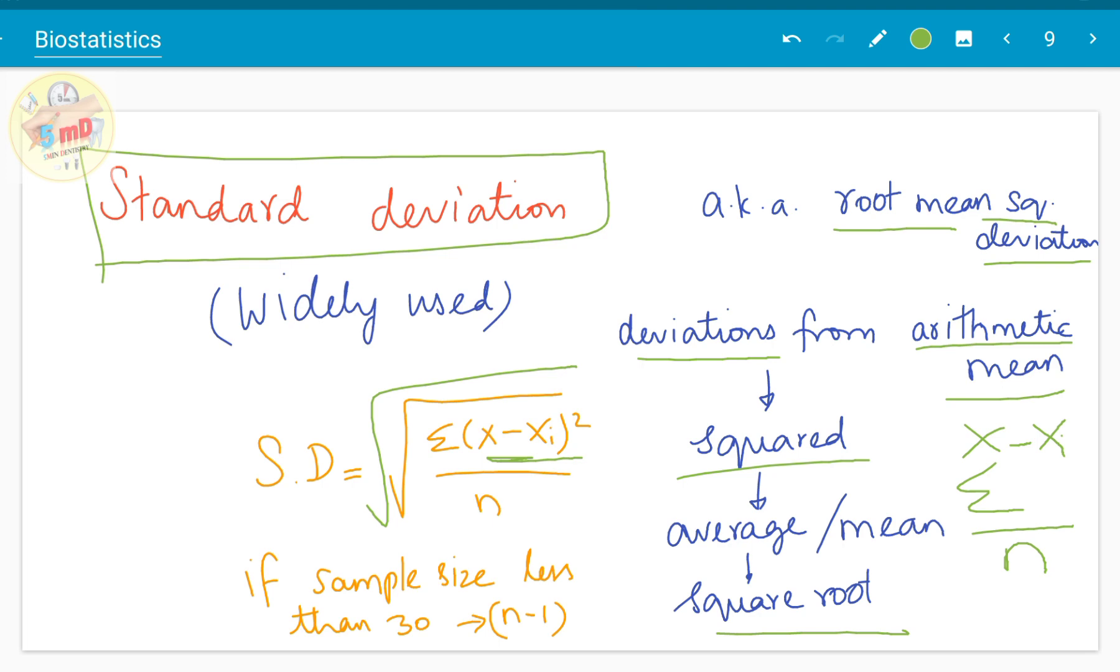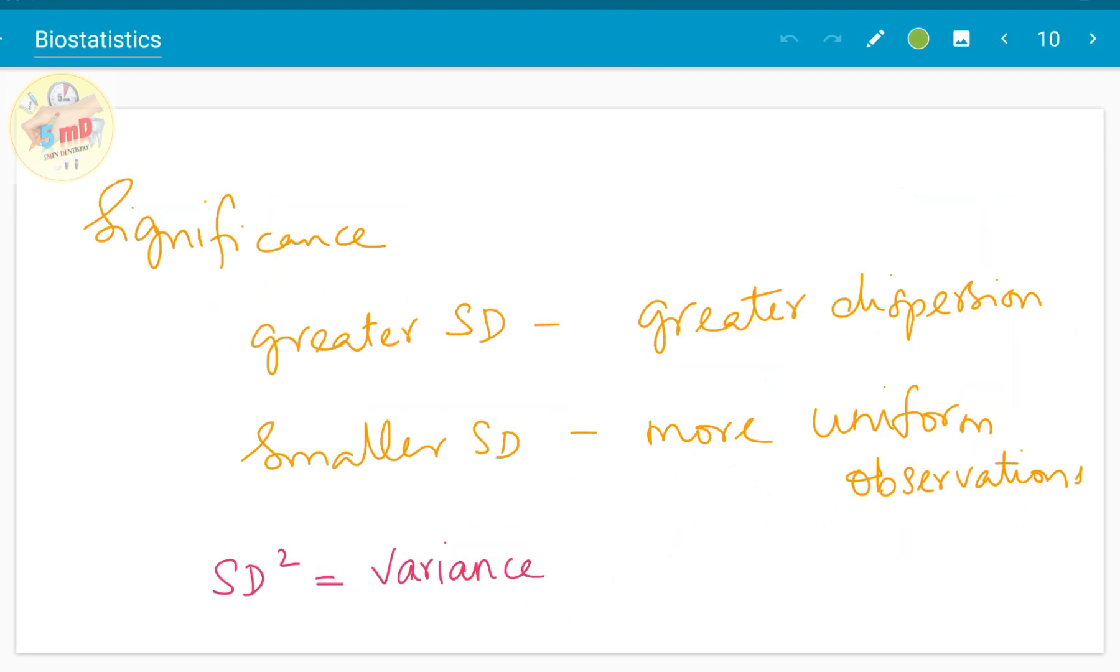This will give you the formula for standard deviation: find the deviations from the arithmetic mean (x̄ - xi), square it, then find the average of it—sum everything and divide by the total sample number—then find the square root of it. If sample size is less than 30, use n-1 instead of n. We are actually squaring it to avoid the negative values. The value could be either positive or negative, but once you square it, it becomes a positive value, and on taking the root we will come back to the original value.